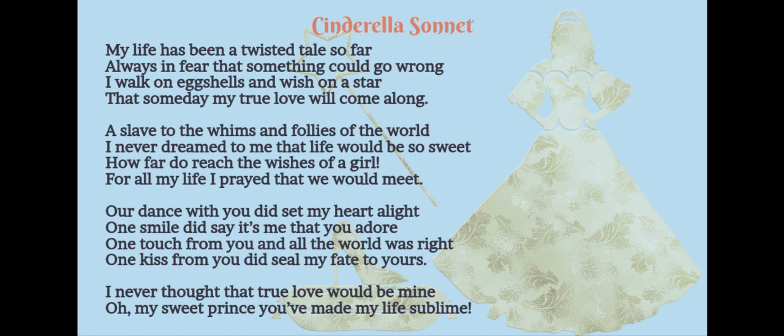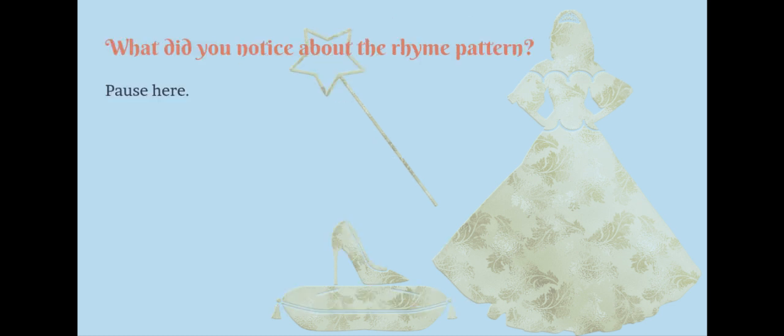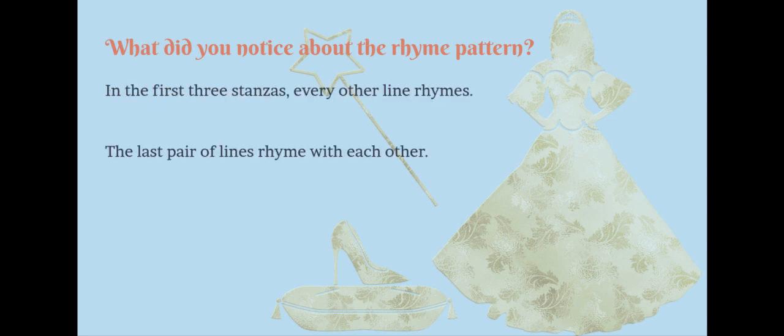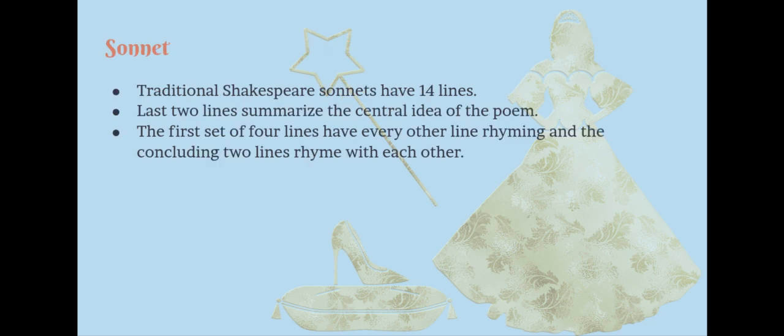Continuing: alight, adore, right, yours — mine, sublime. So in the first three stanzas, every other line rhymes. But the last pair of lines rhyme with each other. This is a special type of poem called a sonnet, taken from the traditional Shakespearean sonnets that have 14 lines, where the last two lines summarize the central idea of the poem or answer a question asked earlier. The first set of four lines have every other line rhyming, and the concluding two lines rhyme with each other.